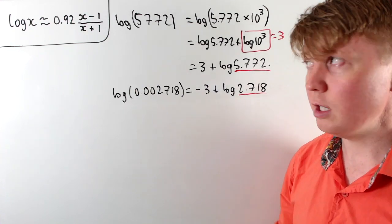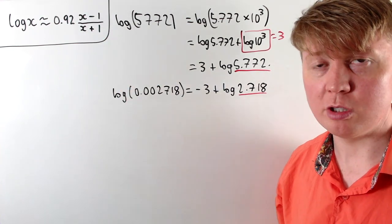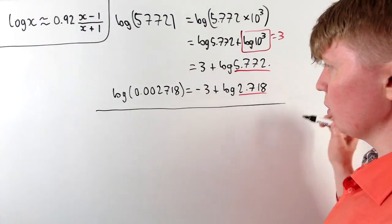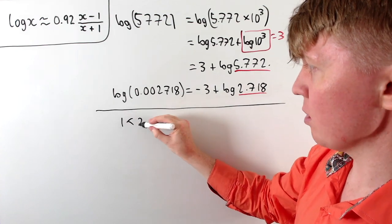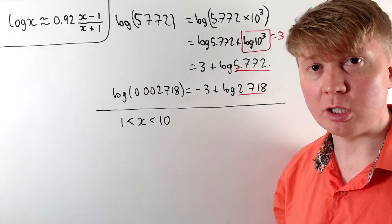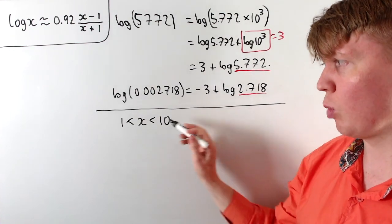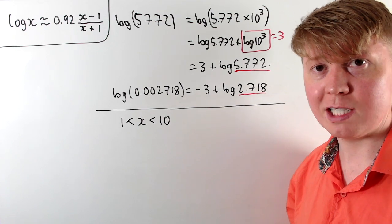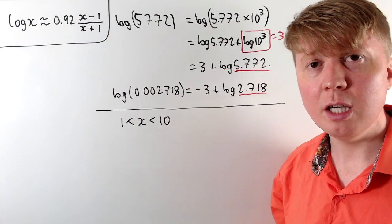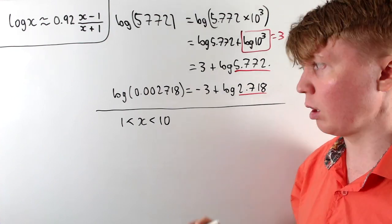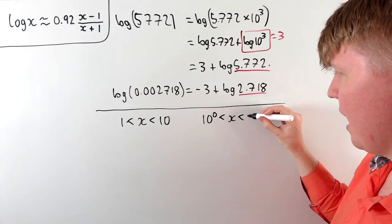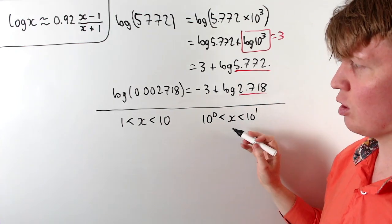This approximation is built on something which is very good for x roughly equal to 1. So at the moment we're only working with x between 1 and 10, which gives a really good approximation when x is near 1, but unfortunately it's not as good when x gets bigger towards 10. We can tweak this to take advantage of the approximation being good for x nearer to 1. Instead of between 1 and 10, think of x as between 10 to the power of 0 and 10 to the power of 1.